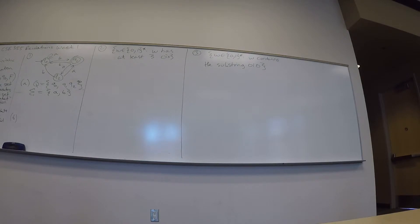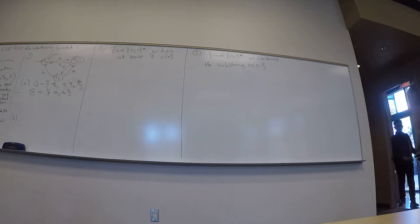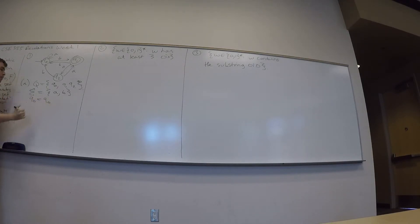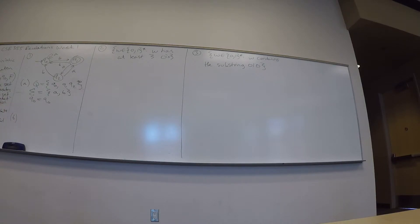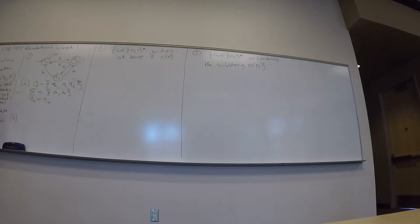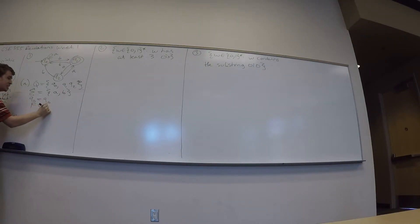Skipping the transition function for now — what is the start state of this machine? Q0. How is it indicated in the diagram? By this incoming arrow from nowhere. So Q0 equals Q0, meaning Q0 is the start state. What is F, the set of final states? Q1 — indicated by the double circle. So F is the set containing Q1.